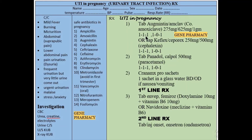The dosing is 1+1+1 — you can prescribe three times a day, or two times a day BD or TDS. You can prescribe Augmentin in UTI in pregnancy.